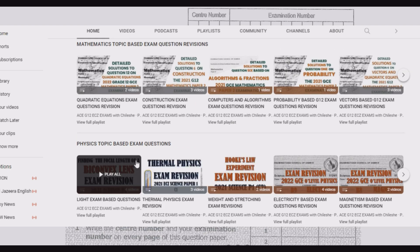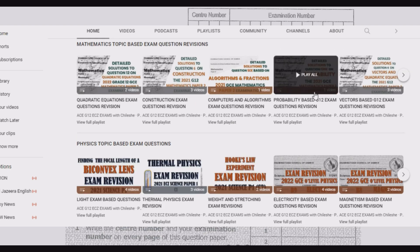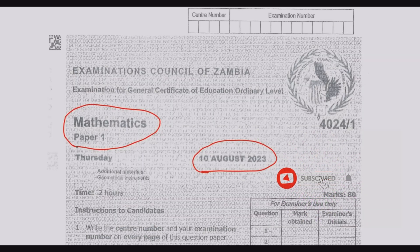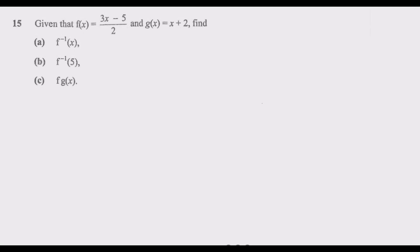Questions are grouped according to the paper and the topics. This is important for you, especially if you're struggling with a specific topic. You can go to a specific topic and find a series of questions from different papers as far back as 2017. Question 15: Given that f(x) = (3x - 5)/2 and g(x) = x + 2, find (a) the inverse f^-1(x).